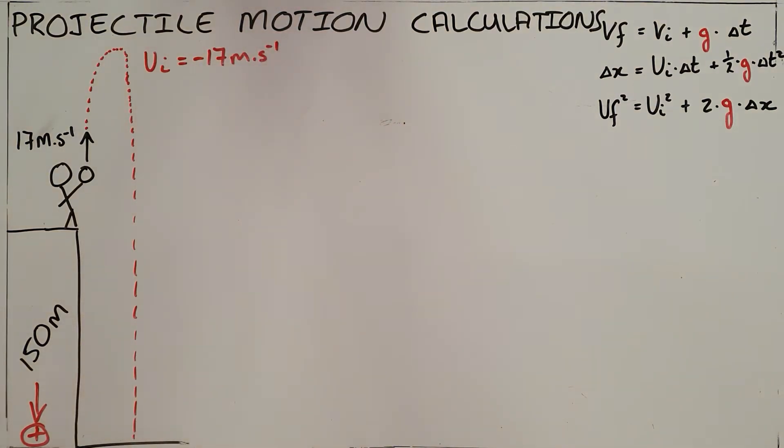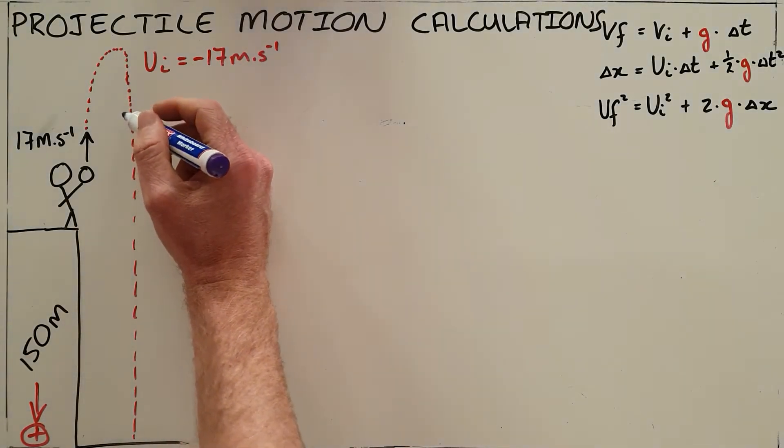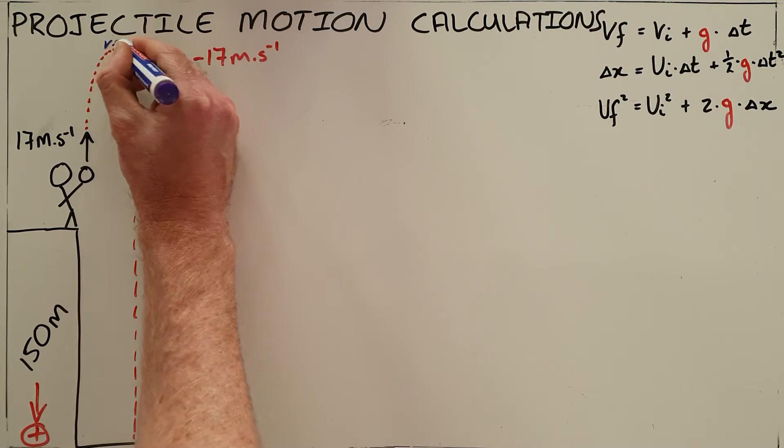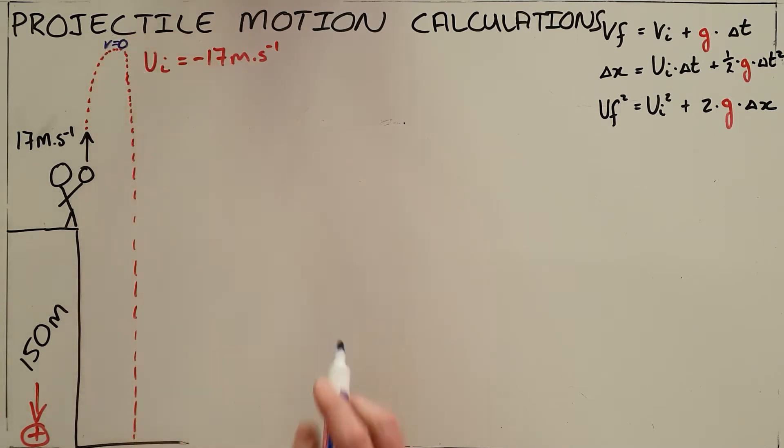The first question that would often be asked here would be calculate the maximum height reached by this object above the ground. In order to do this, we need to realize that when the object reaches its maximum height, its velocity will be zero.